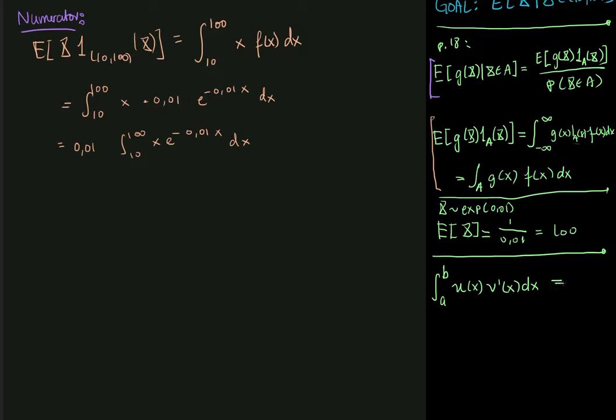And what partial integration tells us is that we can write this integral up as u of x multiplied by v of x, where v of x here is the antiderivative of this v prime up here. So in Danish, stemfunktion evaluated in b minus the same expression evaluated in a.